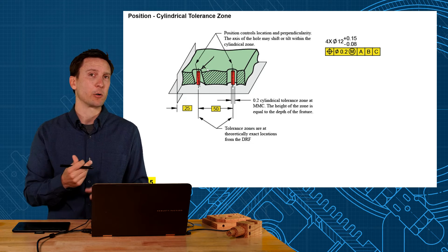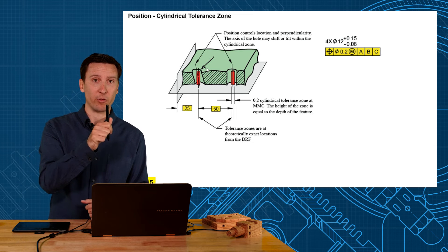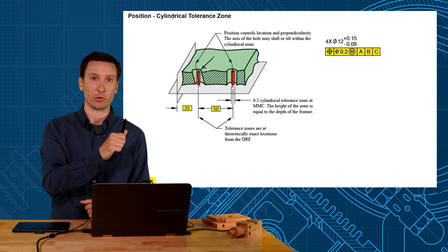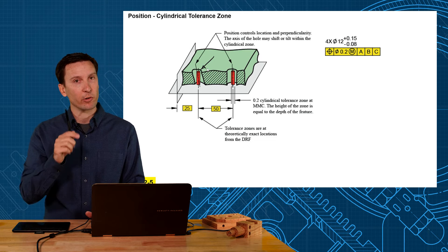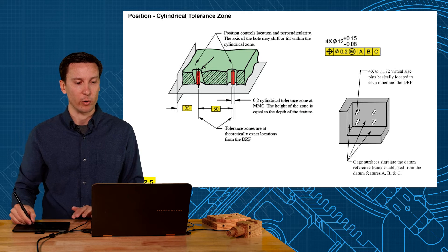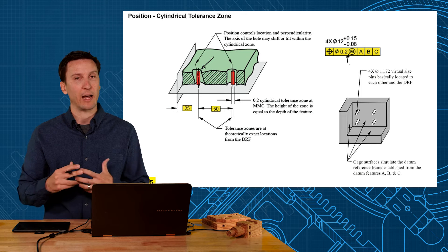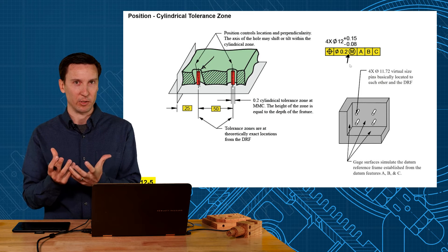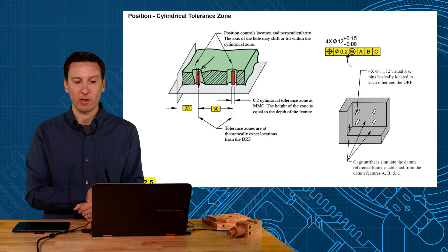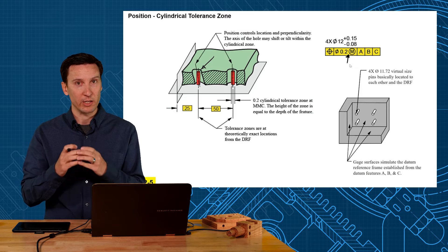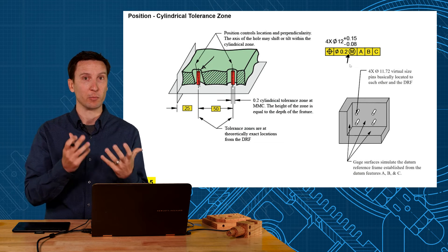Now this is mostly what we talked about in unit 3 where the axis of the hole has to fall within that cylindrical shaped tolerance zone. However there is another way to explain this with the MMC modifier is you can look at it as the virtual condition boundary.